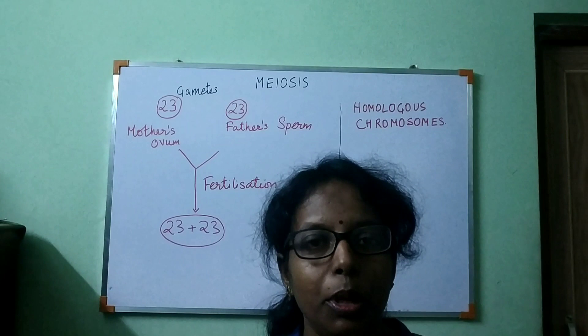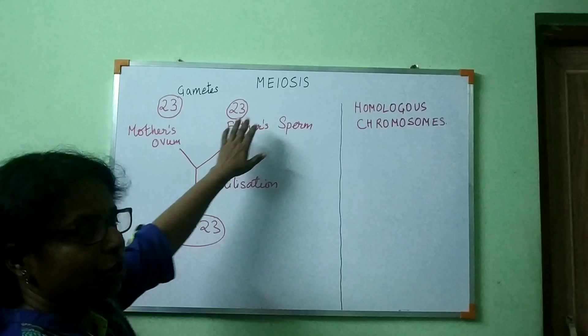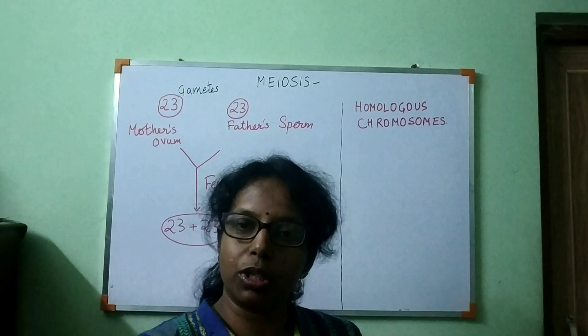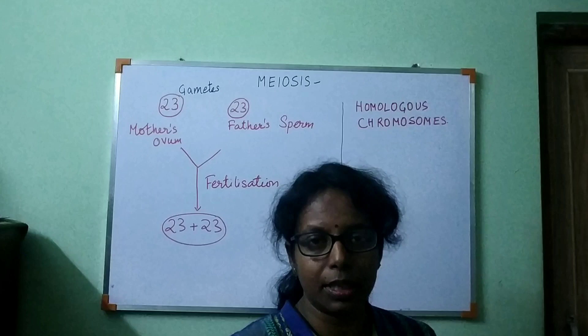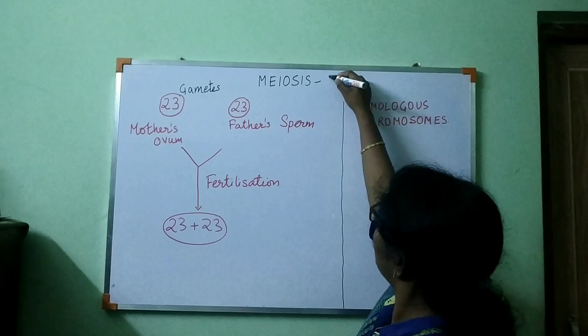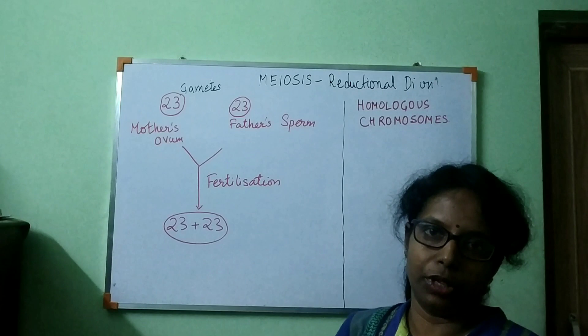In this class we will see how meiosis takes place and why meiosis takes place. In mitosis the number of chromosomes remains the same in the daughter cells, which is why mitosis is called equational division. But in meiosis the number of chromosomes will be halved, and that is the reason why meiosis is also called reductional division — the chromosome number is reduced.